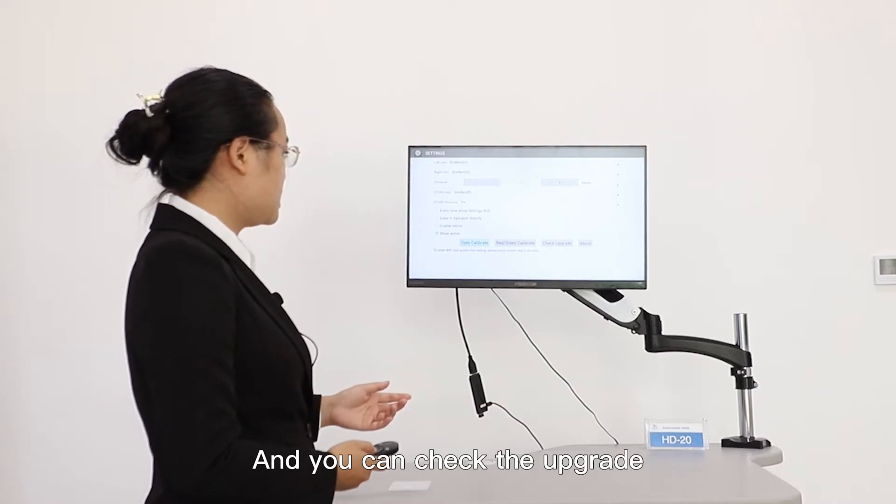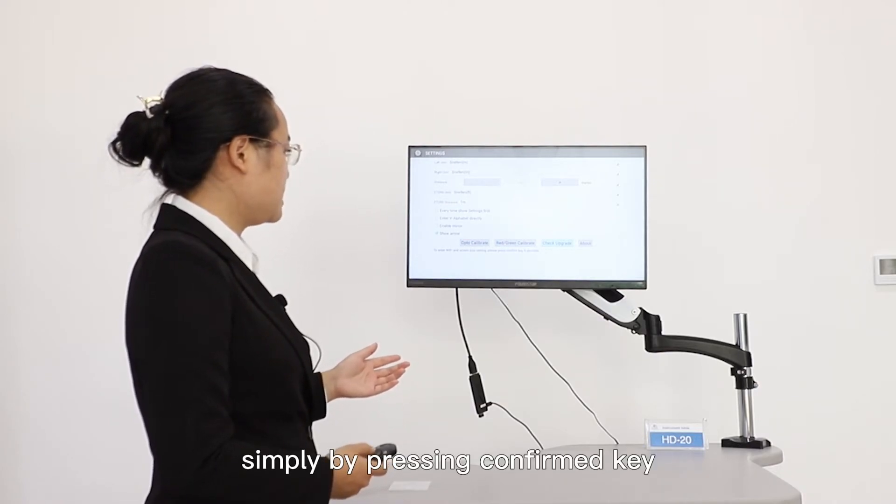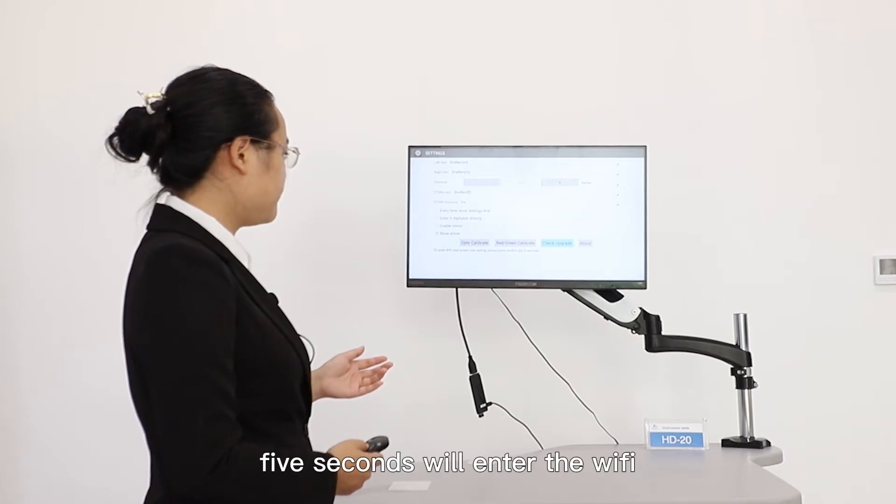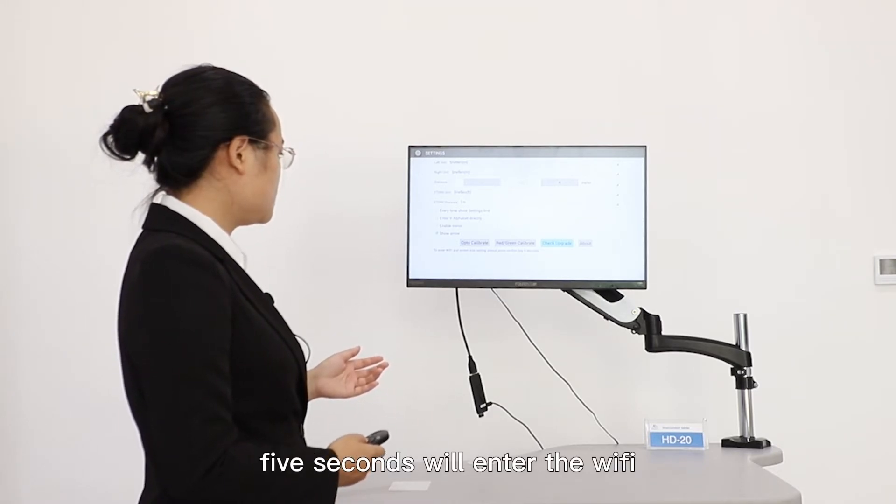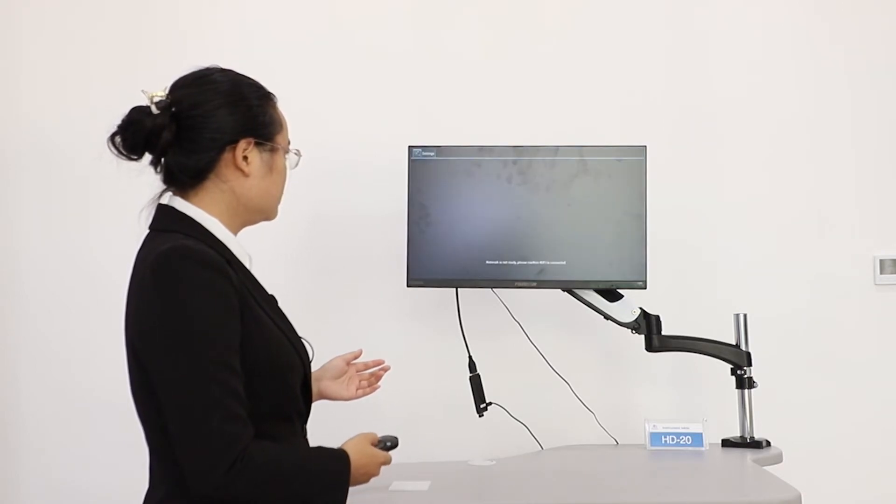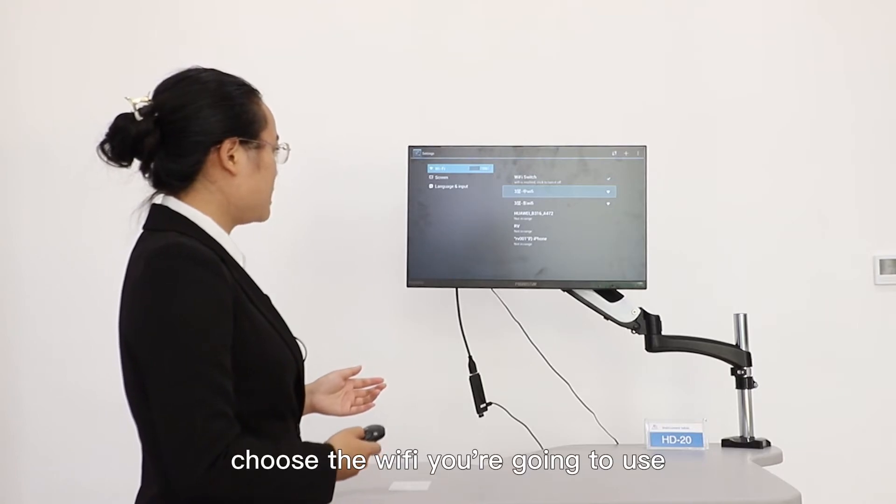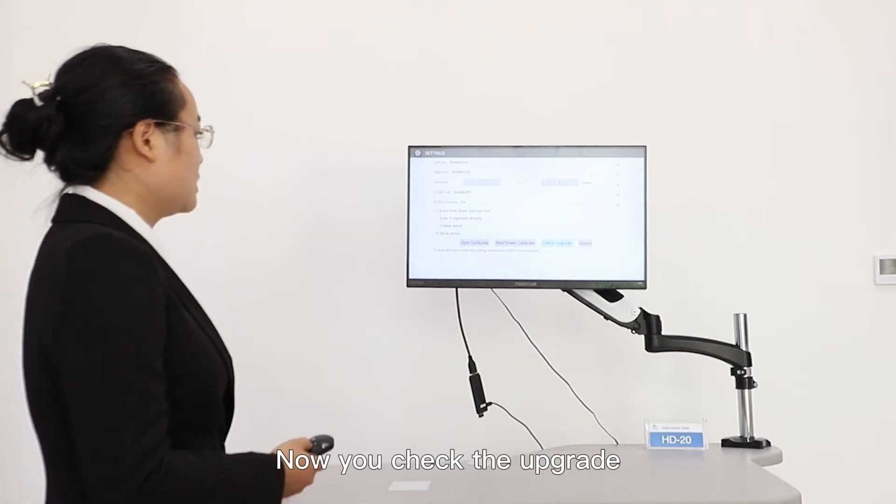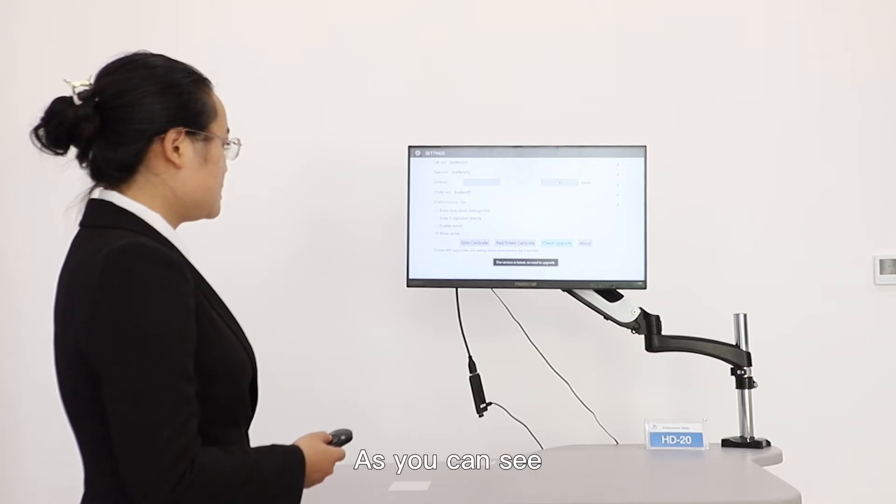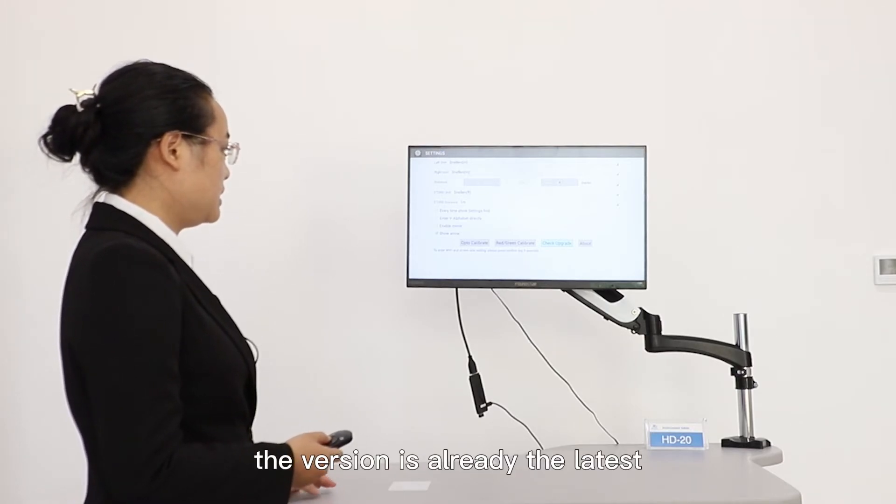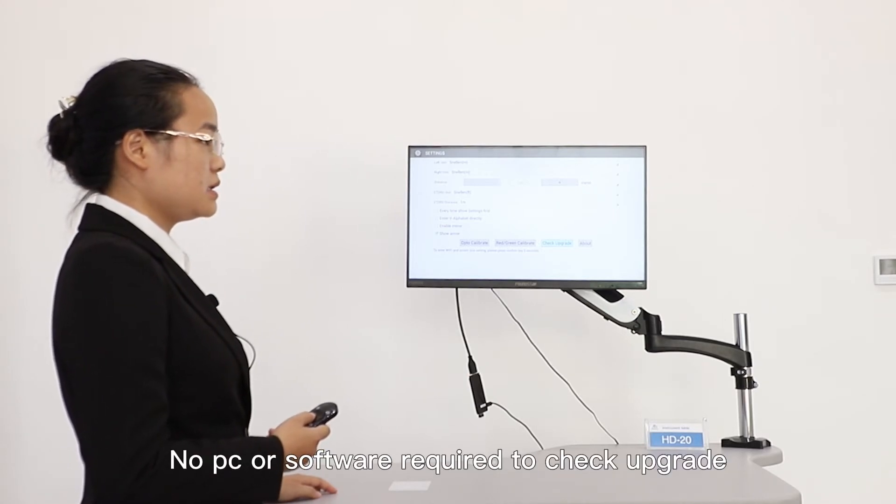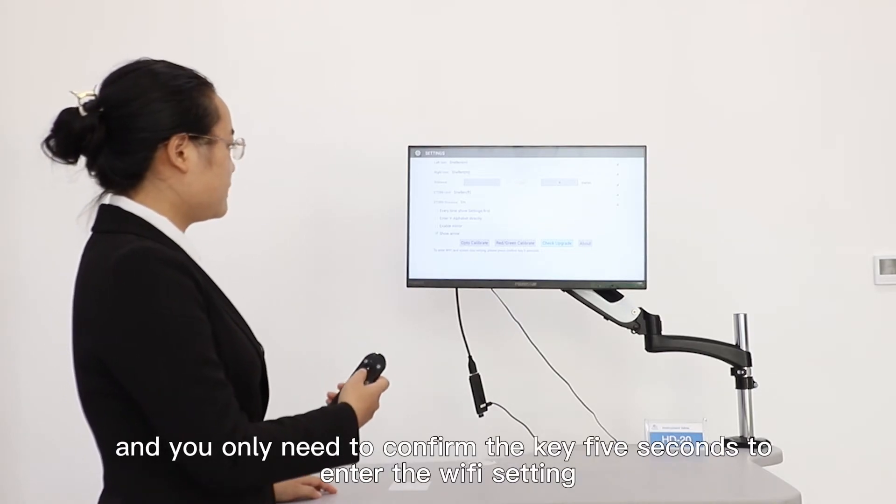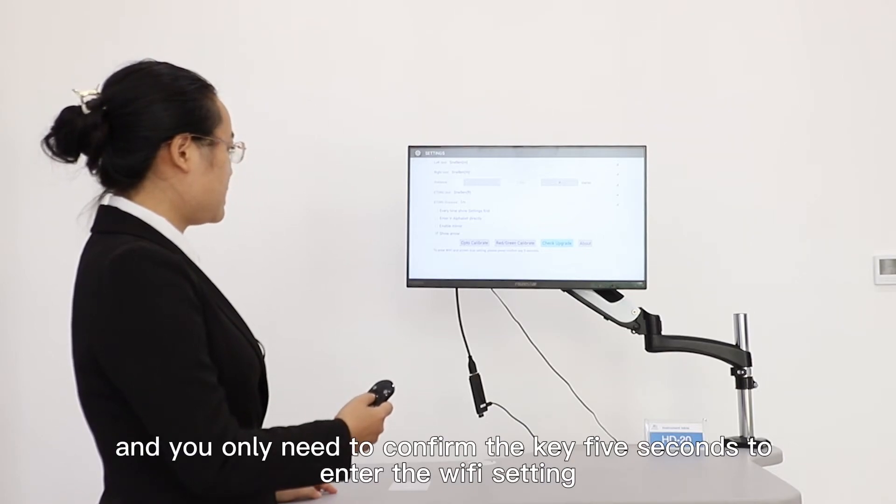And you can check the upgrade simply by holding the confirm key. Press the confirm key for 5 seconds. We will enter the WiFi. Choose the WiFi you are going to use. Then go back. Now we will check the upgrade. As you can see, the version is already the latest. Very simple. No PC or software required to check the upgrade. And you only need to hold the confirm key for 5 seconds to enter the WiFi setting.